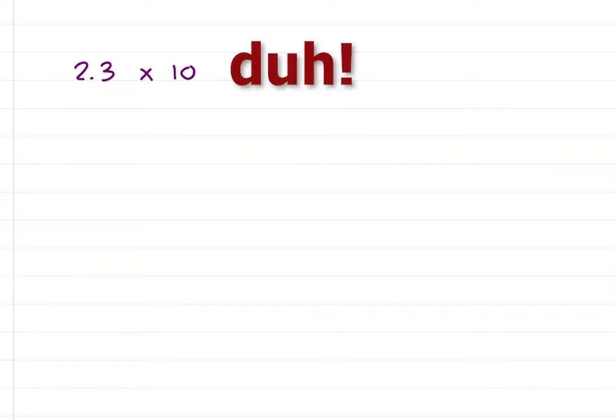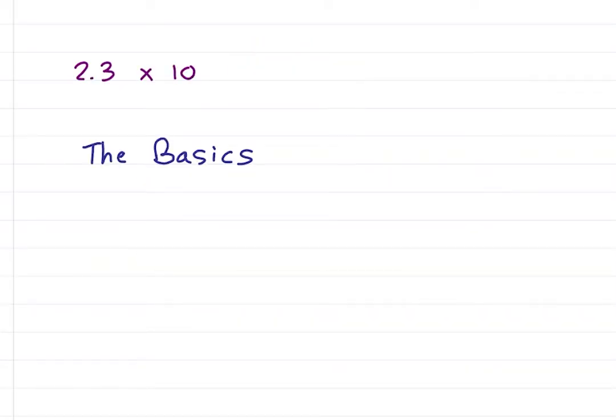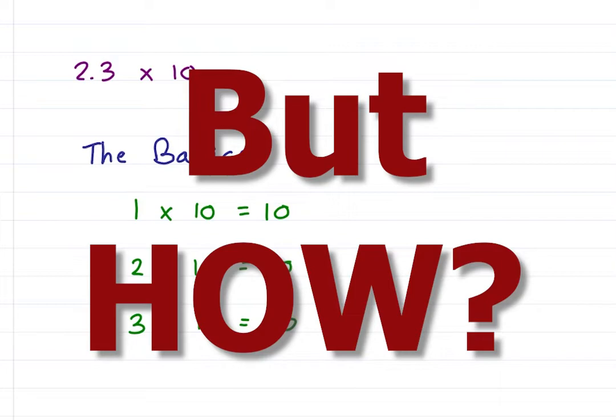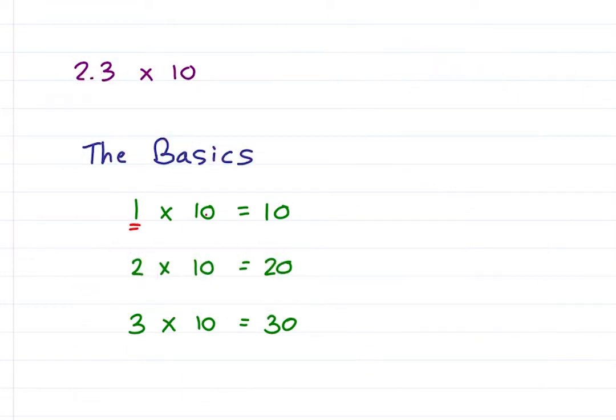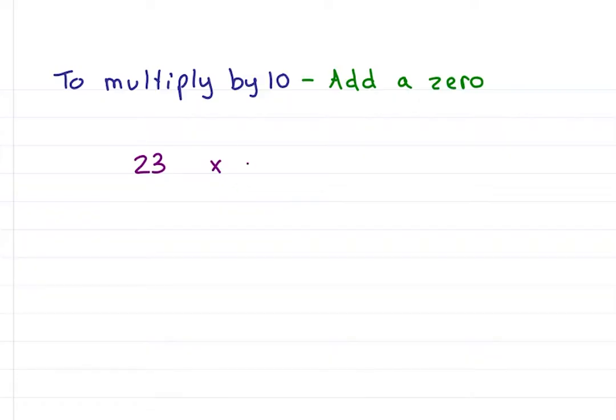2.3 times 10, easy. Because obviously you know that 1 times 10 equals 10, 2 times 10 is 20, 3 times 10 is 30. But how did you know that? Meaning, what did you do? You had a number and multiplied it by 10 by simply adding a 0. Does 2.3 times 10 get a 0 for 2.30? Those darn decimals. 2.30 is just 2.3, which is exactly the number we started with. So let's change the rule.